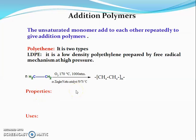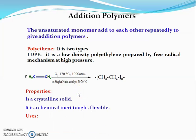Now we have seen the properties of low density polyethylene. It is a partially crystalline solid with a melting point of 115°C. It is chemically inert, soft, and flexible.